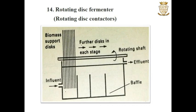Rotating disc fermenters, also known as rotating disc contactors, are generally used in effluent treatment. There are several discs fitted onto a central drive shaft which are capable of slow rotation. The microorganisms are grown as thin microbial films on the surface of these discs. While rotating slowly through the effluent, 40–50% of the disc surface is submerged, and the microorganisms on the disc surface can oxidize the nutrients present in the effluent. The discs are generally made from synthetic material such as polystyrene or PVC.